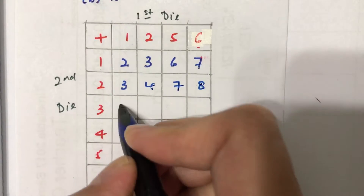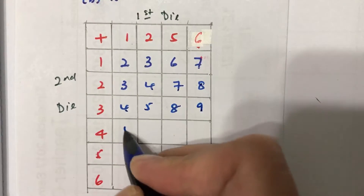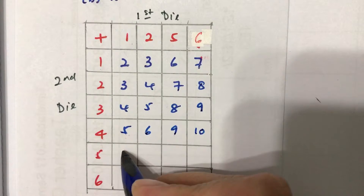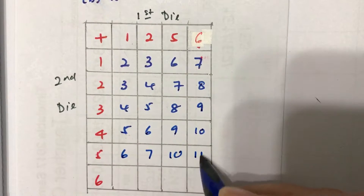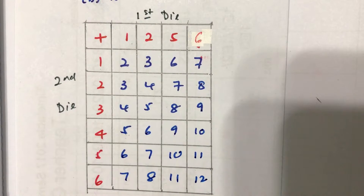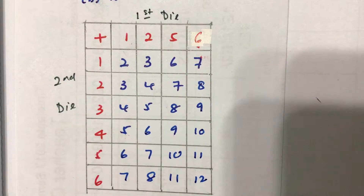I'm just going to do it very quickly. There you have it — this is what we call a possibility diagram. What's good about the possibility diagram is that at one glance you can see the sum, and it will make finding the probability a lot easier.